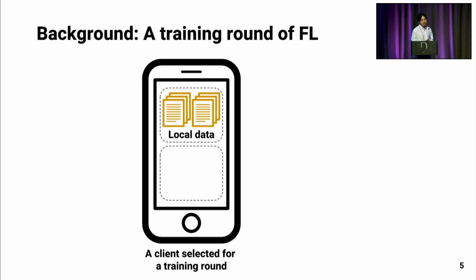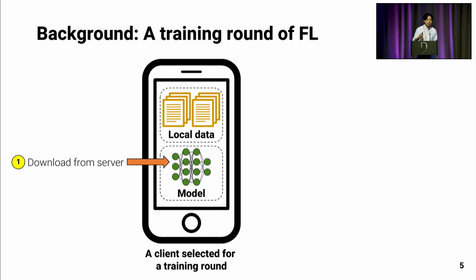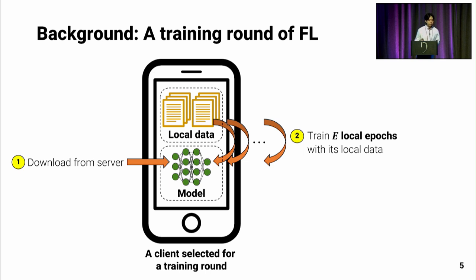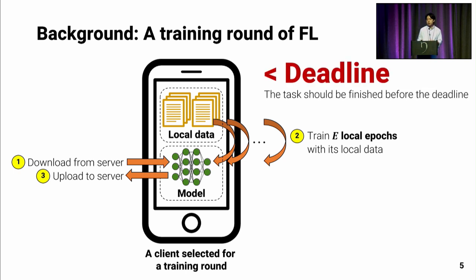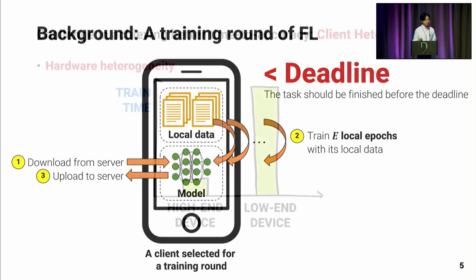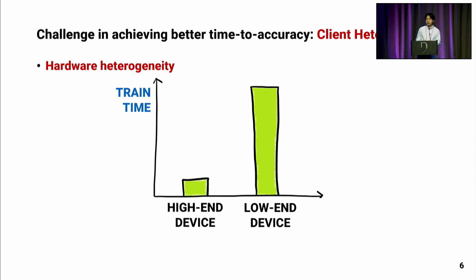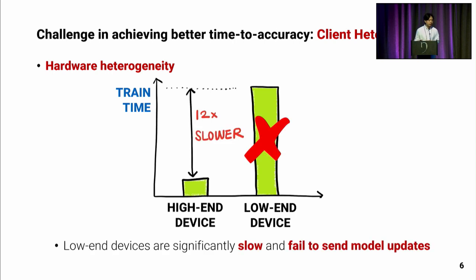Here we have a client selected for a training round. The client first downloads the model from the server, and with that model, the client performs E local epochs of training with its local data, where E is a predefined constant. With the updated model, the client uploads it to the server, and this all needs to be done before the deadline — a timeout that requires the client to finish the task. The challenge in achieving better time-to-accuracy is client heterogeneity, and there are two types.